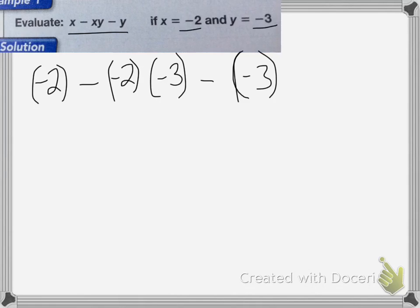Now we're going to do order of operations. We're going to multiply before adding. So we're going to multiply negative 2 times negative 3, which is positive 6. Then we drop the other numbers down.